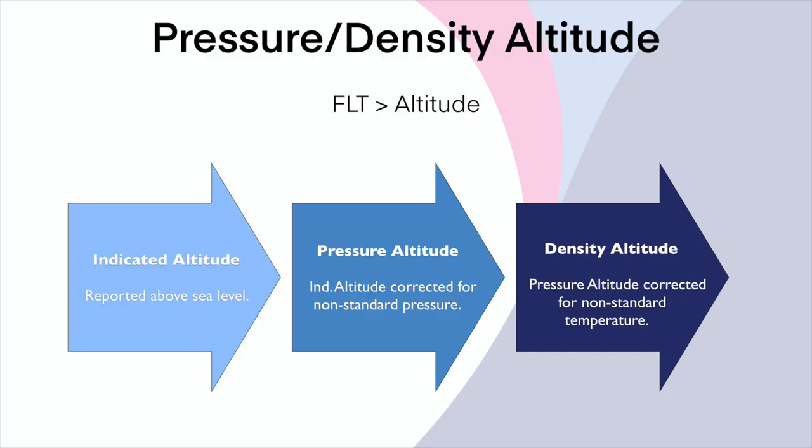The first thing I want to use this for is density altitude and pressure altitude. The FAA questions typically give you either a pressure altitude already calculated, or they give you an airport elevation — called indicated altitude. Your airport elevation, when corrected for non-standard pressures, gives us the pressure altitude. Then using temperature, that gives us our density altitude, which is the altitude the airplane is going to feel like it's flying at.